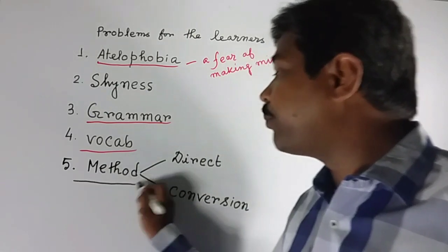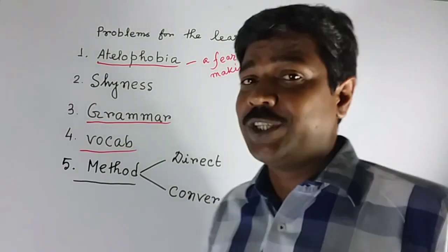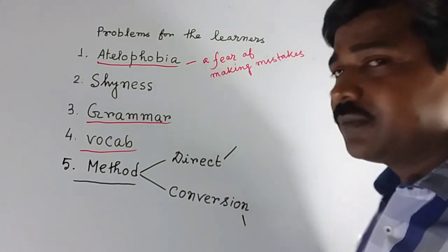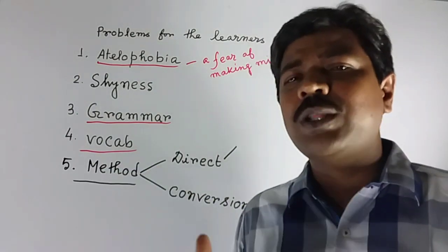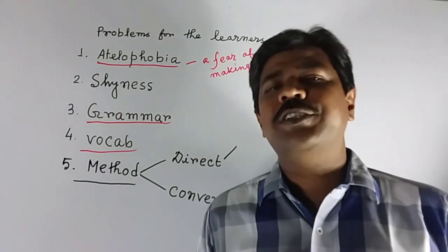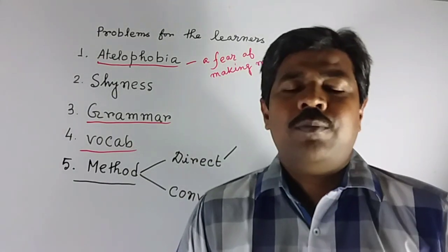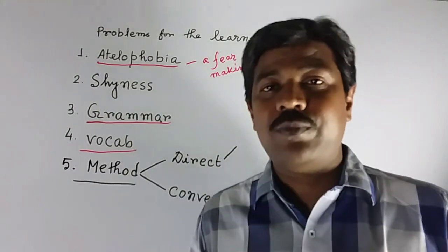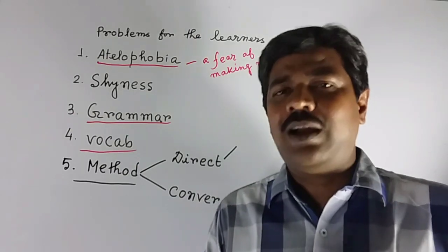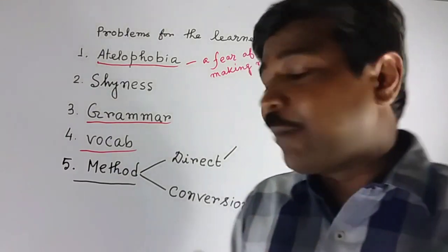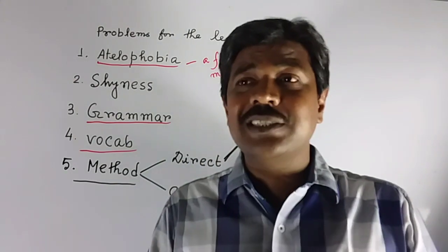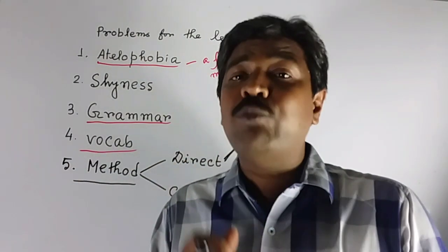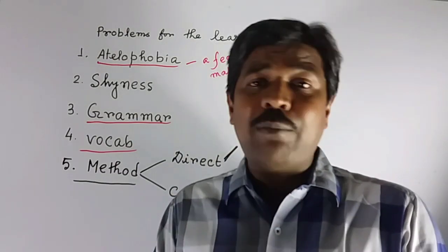The most important problem is method. I have written it in two parts: one is direct, and another is the conversion method. The conversion method is the traditional method — each and everyone practices this way. It means we convert English into our mother tongue, then convert it back into English and then speak. As a result it takes a huge time and that's why we cannot communicate properly. We have to choose the direct method — that means we have to think in English in any kind of situation, and for that we need to be habituated with English words.